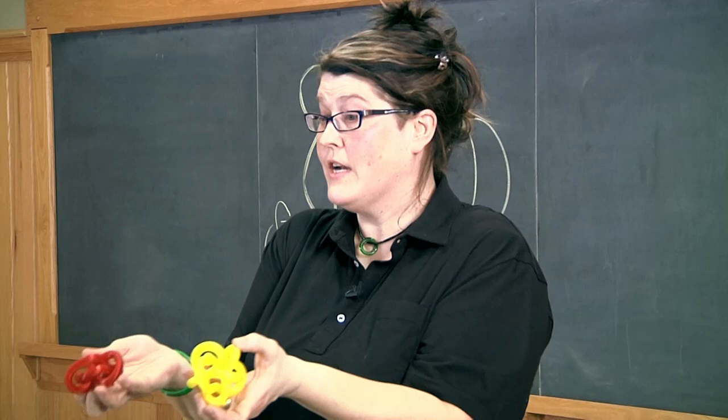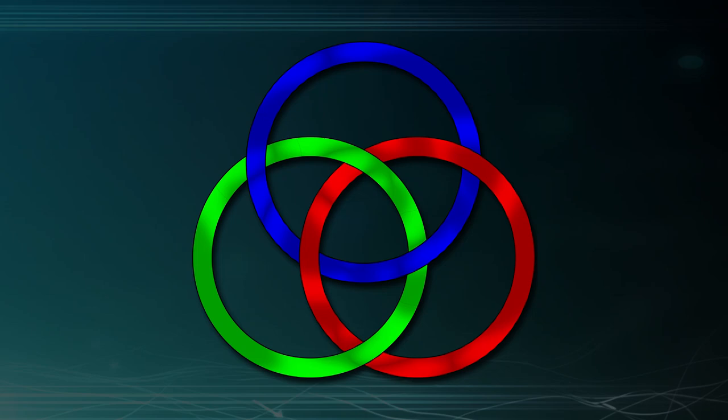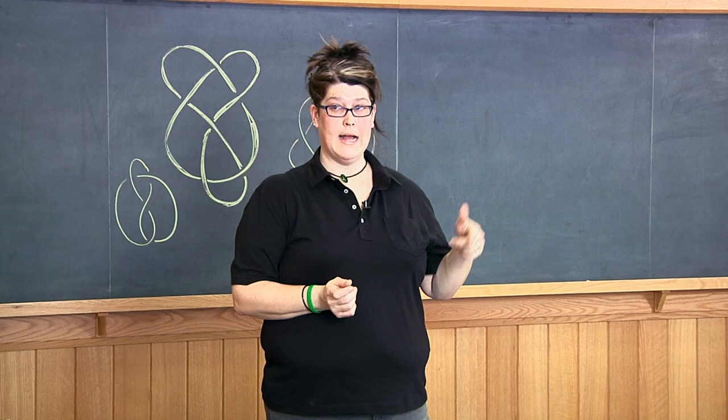Here's another example. The Borromean rings. That's three rings, no two of which are linked, but all together they're linked. Now the Borromean rings are a very famous object. When I had a 3D printing class last spring, I told the students, go and 3D print something mathematical. I don't care what it is.